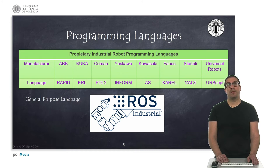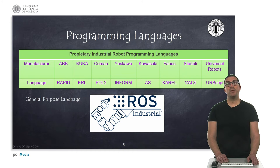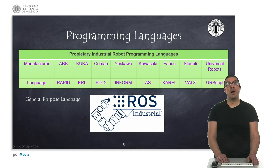ABB uses Rapid, KUKA uses KRL, Comau uses PDL2, Yaskawa uses Inform, Kawasaki uses AS, FANUC uses Karel, and Stäubli uses VAL3, and Universal Robots uses URScript. As you can see, this makes it impossible to explain all of them. Anyway, that would not make much sense because you might never use a specific robot brand. So for this reason, we will focus on Rapid in the next videos, which is one of the most widely used languages. And once you know the basics for programming industrial robots, you will see that it poses no challenge to program different robots.